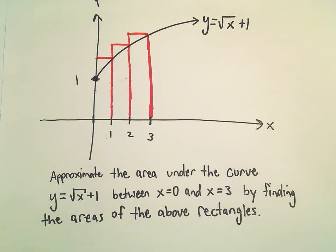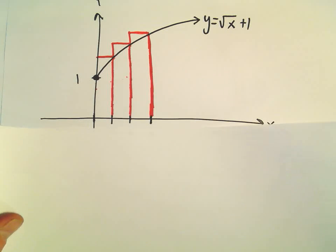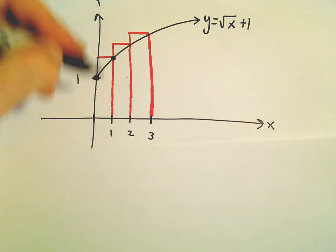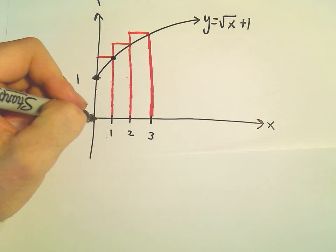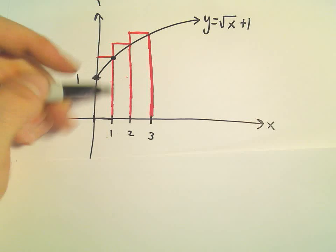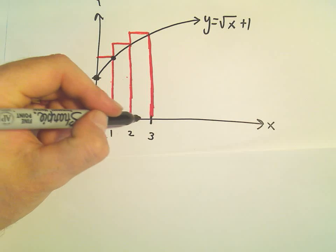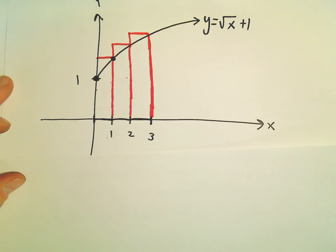To do that in this case shouldn't be too terrible, because the width of each rectangle is just going to be 1. We're going from 0 to 1, from 1 to 2, and 2 to 3, so they all have a width of 1.